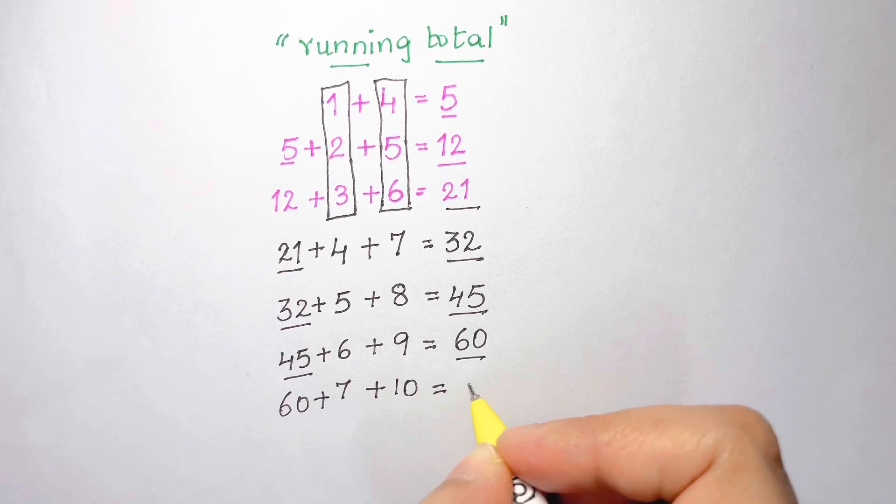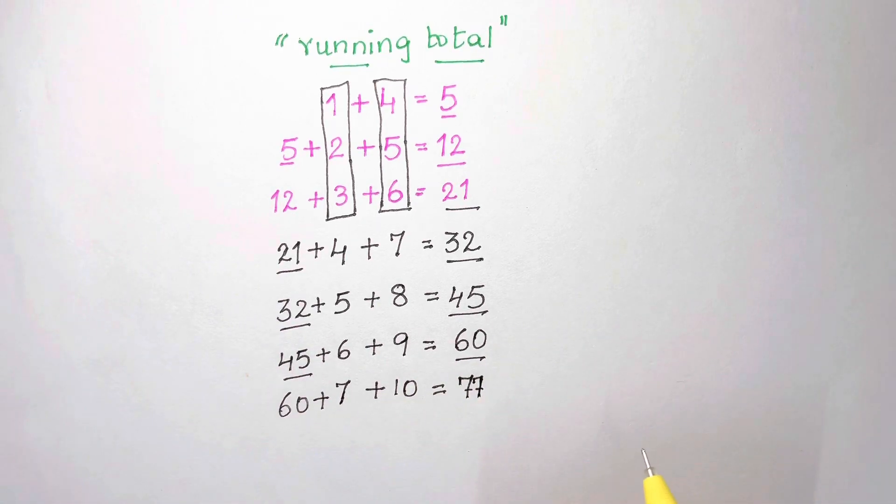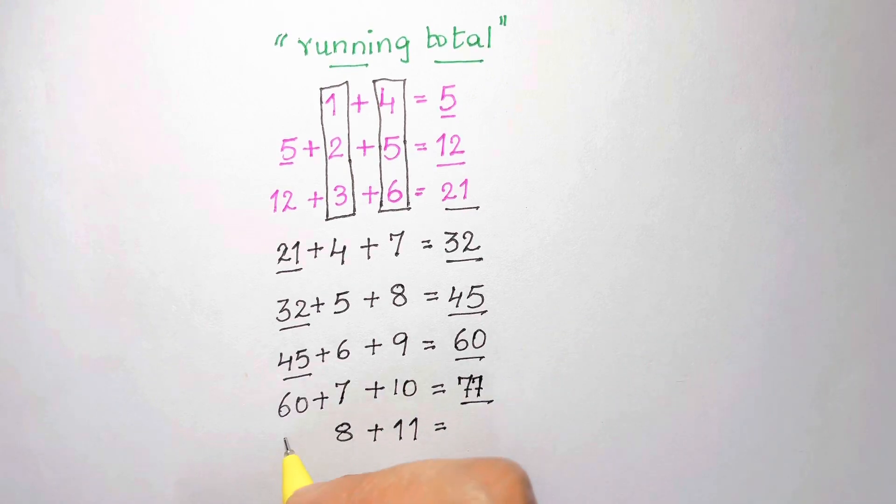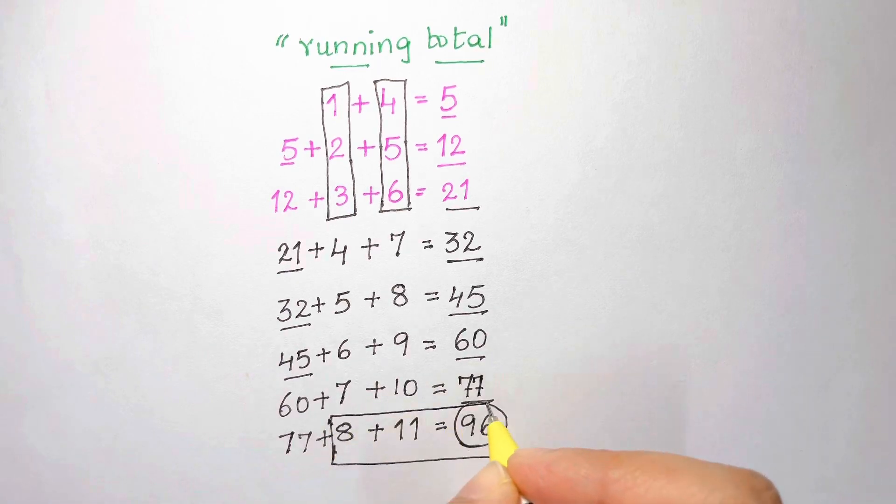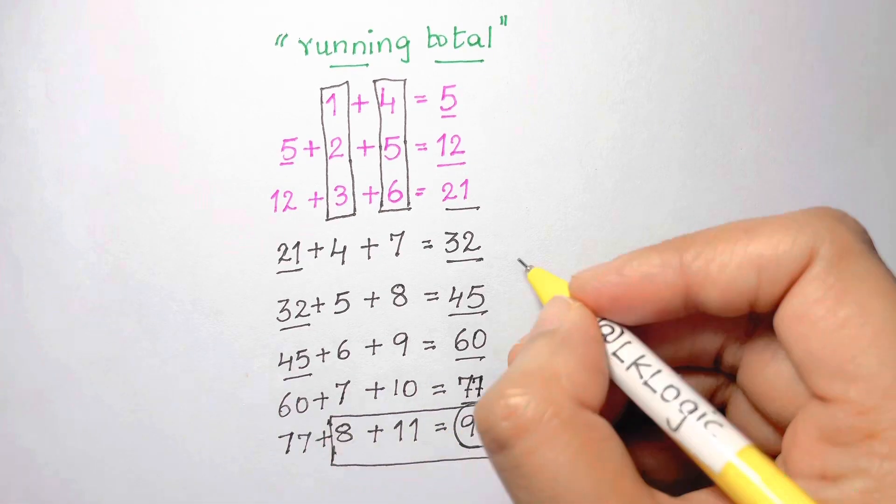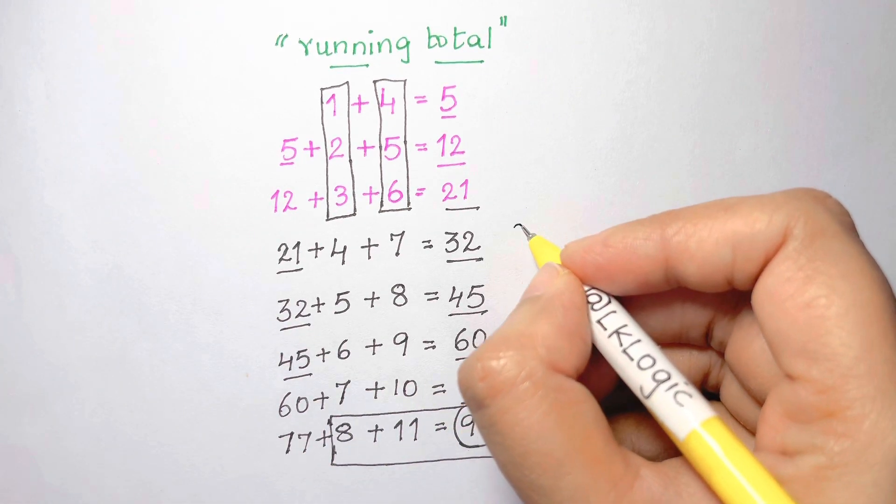Then we have 7 plus 10. We add that to 60 to get 77. And when we continue the pattern, we once again get to 8 plus 11. I will add our previous result of 77, and then we get the result of 96. So under this interpretation we also get to the answer of 96. We only need to adjust the running total by putting in some of these missing lines that are not part of the original puzzle.